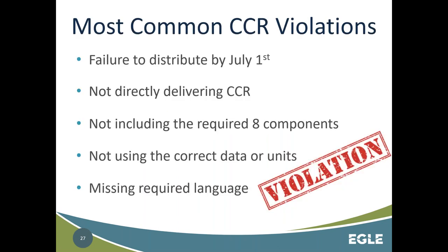Some of the most common CCR violations we see are: failure to distribute the report by July 1st; not directly delivering the CCR — for example, publishing in the newspaper and just saying the CCR is available online does not meet the delivery requirement; not including all eight required elements; having incorrect data units; and missing required language. If you have any questions about your report, please reach out to us — we'd like to help you fix it before you distribute it.